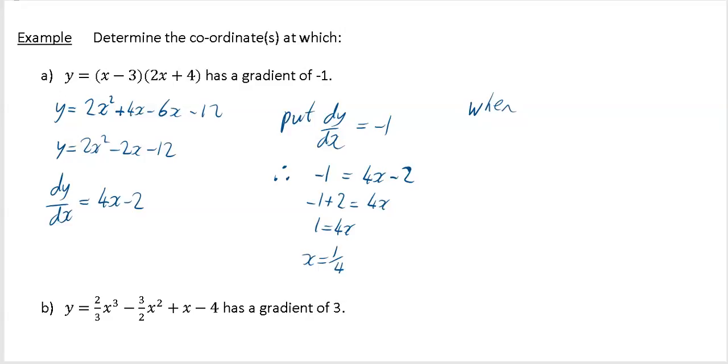So when x equals 1 quarter, just sub it into your y. I'm going to put it into the new form of my y, so that's going to be 2 times (1 quarter) squared minus 2 times (1 quarter) minus 12. When I did that, I got minus 12 and 3 eighths on my calculator. So my answer is x value 1 quarter and y value minus 12 and 3 eighths.